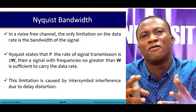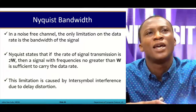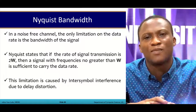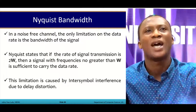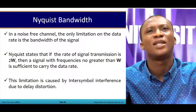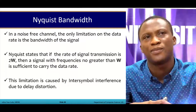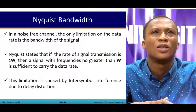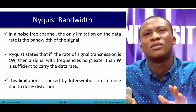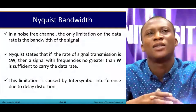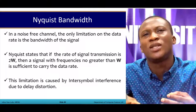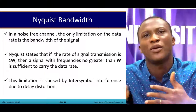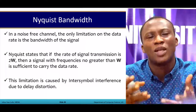Nyquist states that if the rate of signal transmission is twice the bandwidth W, then a signal with frequency no greater than W is sufficient to carry the data. To move data from one point to another, you need twice the bandwidth to carry that data across. This limitation is caused by inter-symbol interference due to delay distortion.